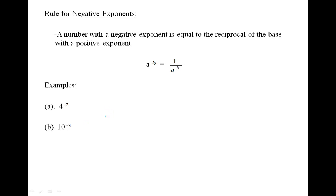Next, let's look at the rule for negative exponents. A number with a negative exponent is equal to the reciprocal of the base with a positive exponent. So a to the negative b equals one over a to the b.